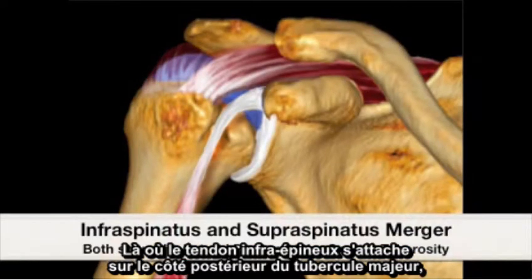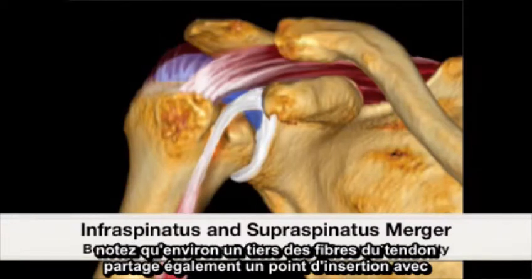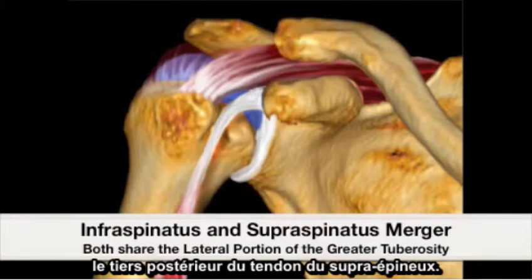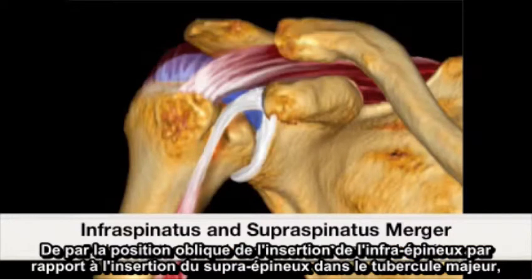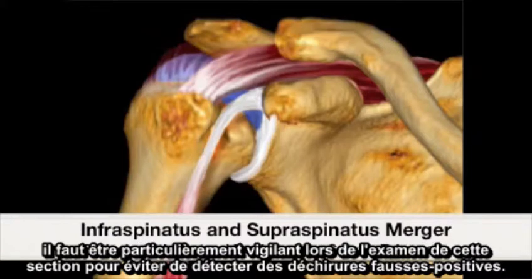As the infraspinatus tendon attaches to the posterior aspect of the greater tuberosity, take note that about one-third of its tendon fibers share an insertion point with the supraspinatus's posterior one-third as well. Due to the oblique nature of the infraspinatus insertion relative to the supraspinatus insertion to the greater tuberosity, special care should be taken while scanning through this section to avoid false positive tears.